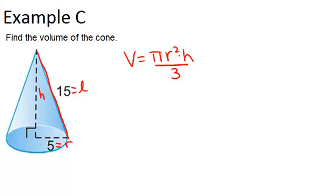So we're going to need to use Pythagorean theorem to solve for the height first. So we have that 5 squared plus h squared equals 15 squared.